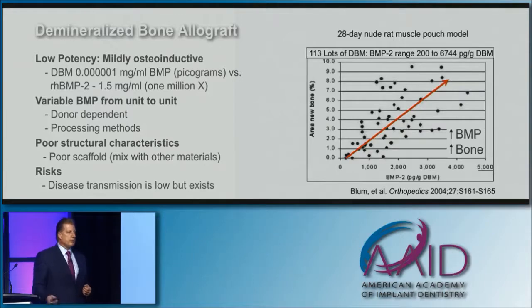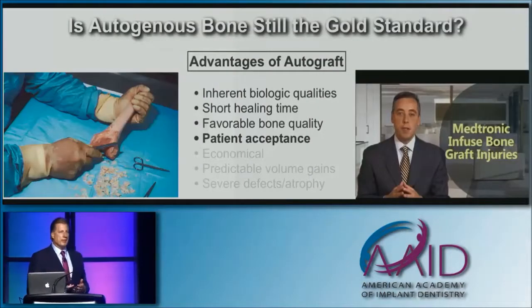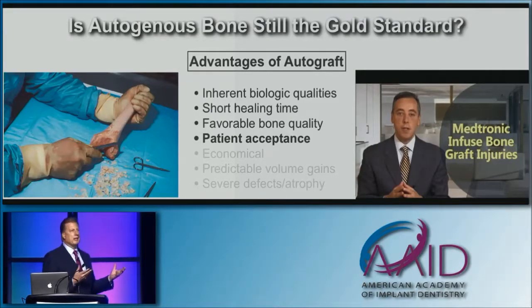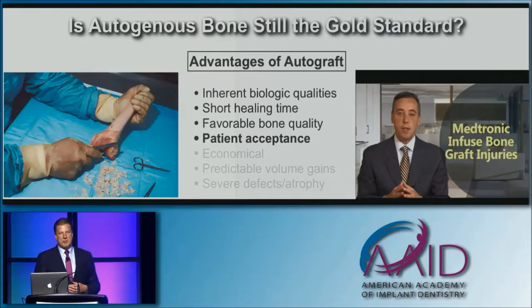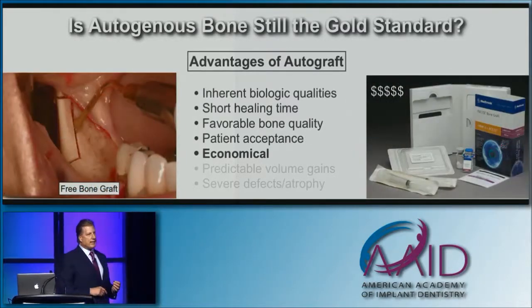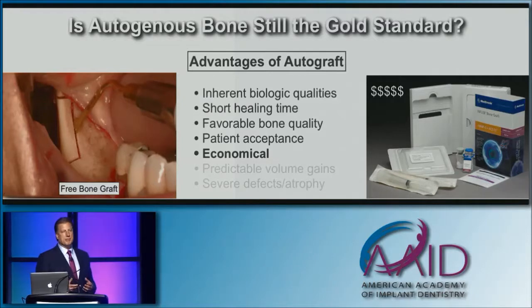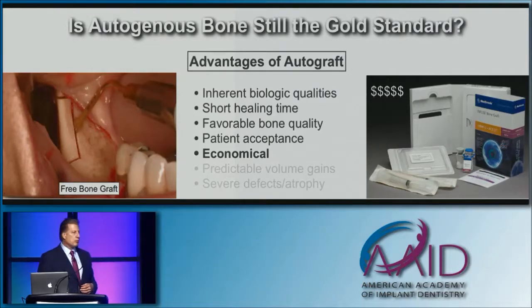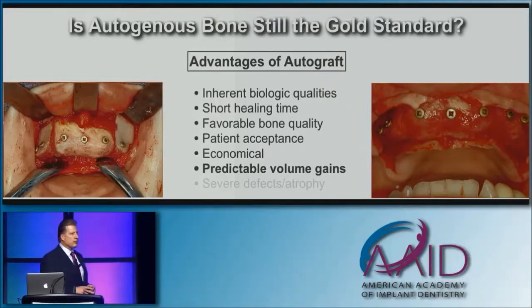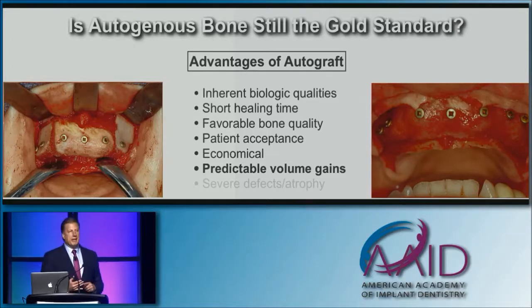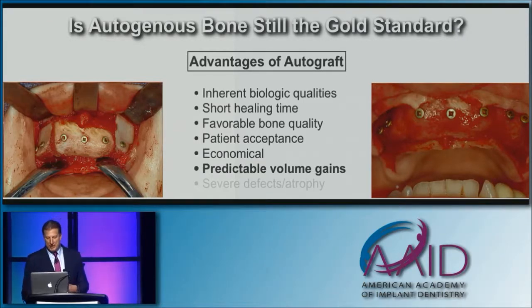There are certainly risks present with bank bone, though they're quite low. Patients accept using their own bone — they may have concerns with bank bone, cow bone, and some biologics. We're seeing some medical-legal issues come into patients' minds when discussing these materials. Autogenous bone is definitely economical; there's a huge economic benefit. You pay for it with time to harvest, but local harvesting really doesn't add much time or morbidity compared to some biologics, which can get quite pricey. The main reason I've used autogenous bone throughout my career is really predictable volume gains — patients come to us because they want implant teeth, and if I can't grow bone predictably, they won't get implant teeth.